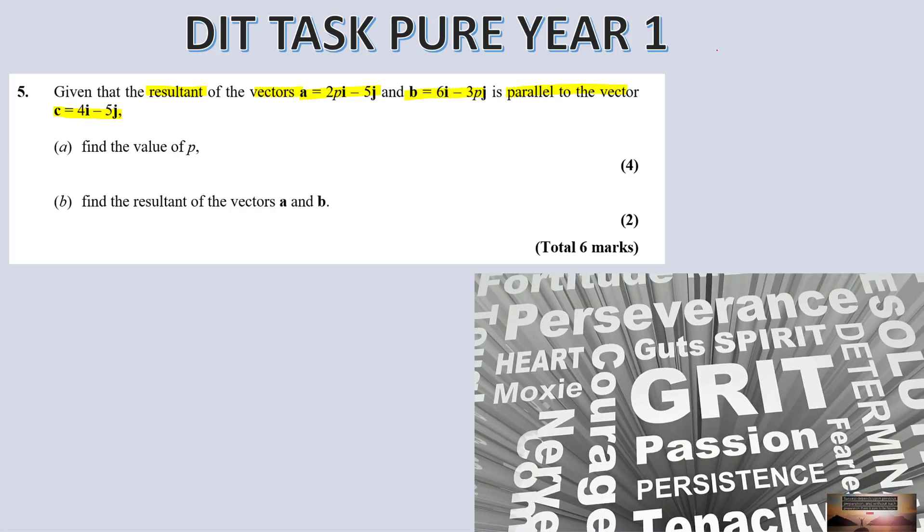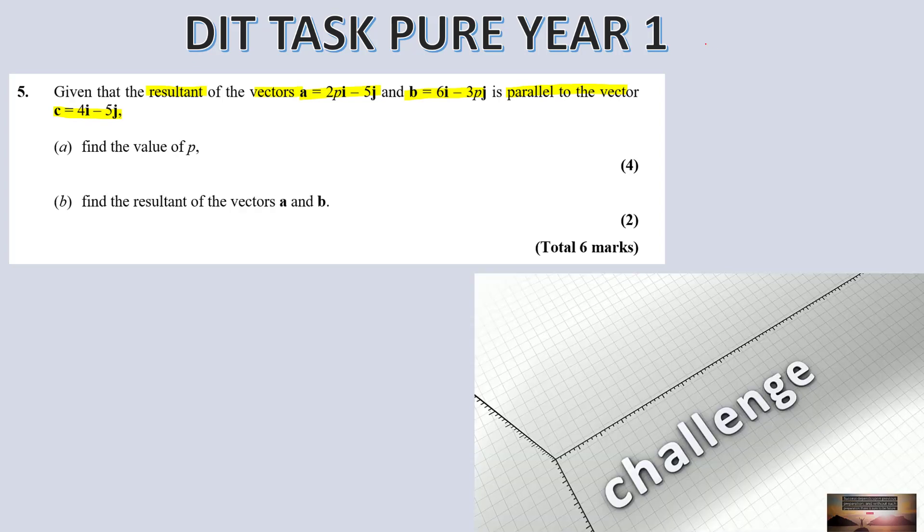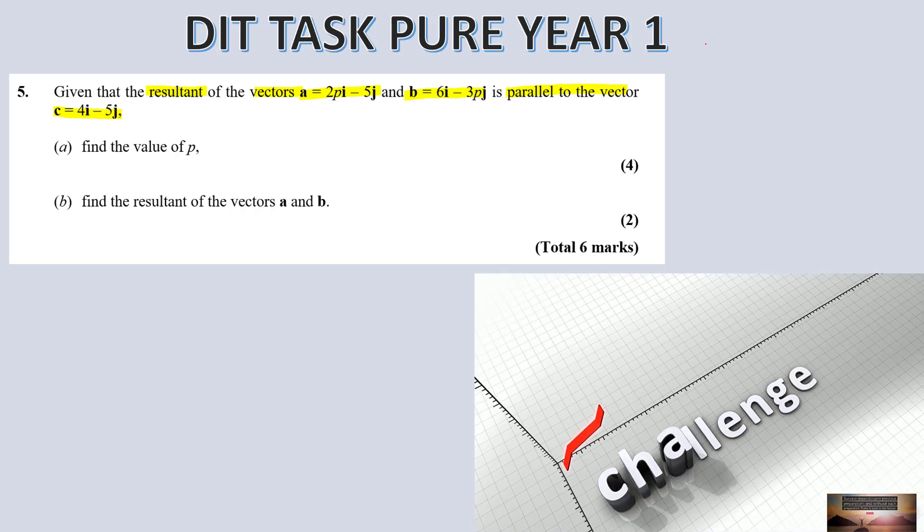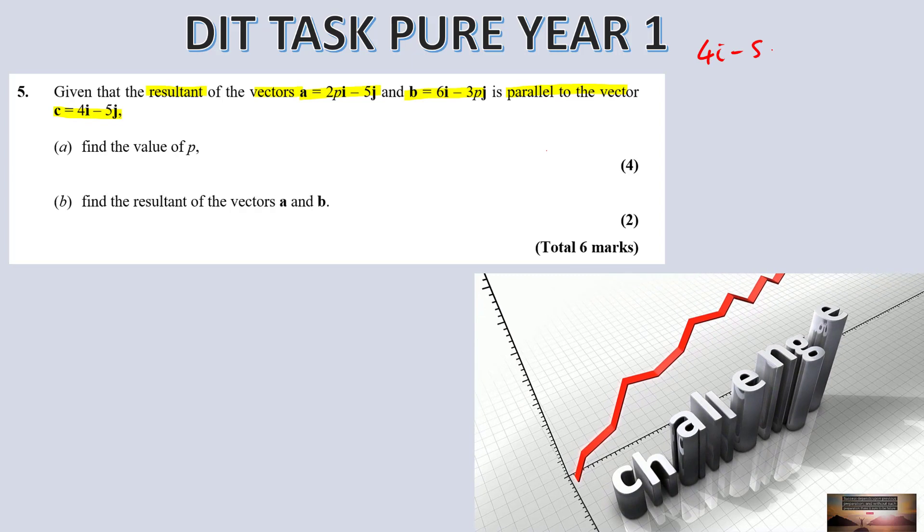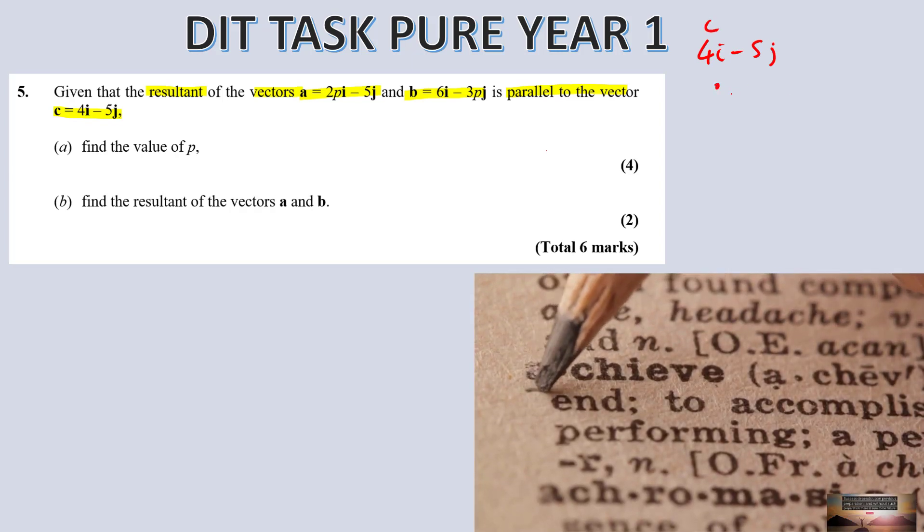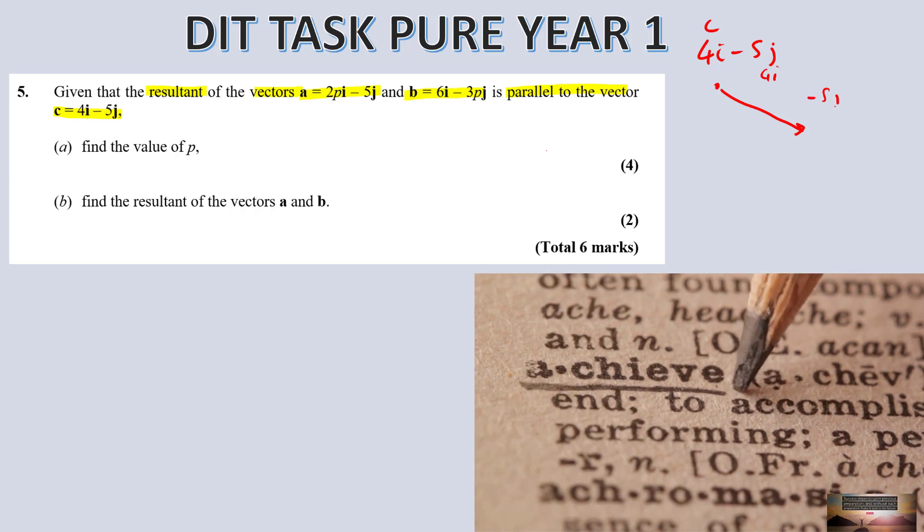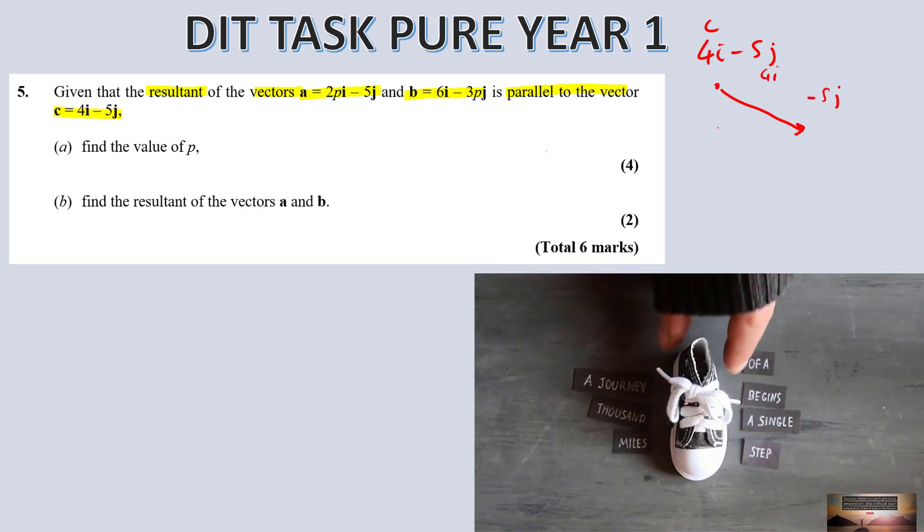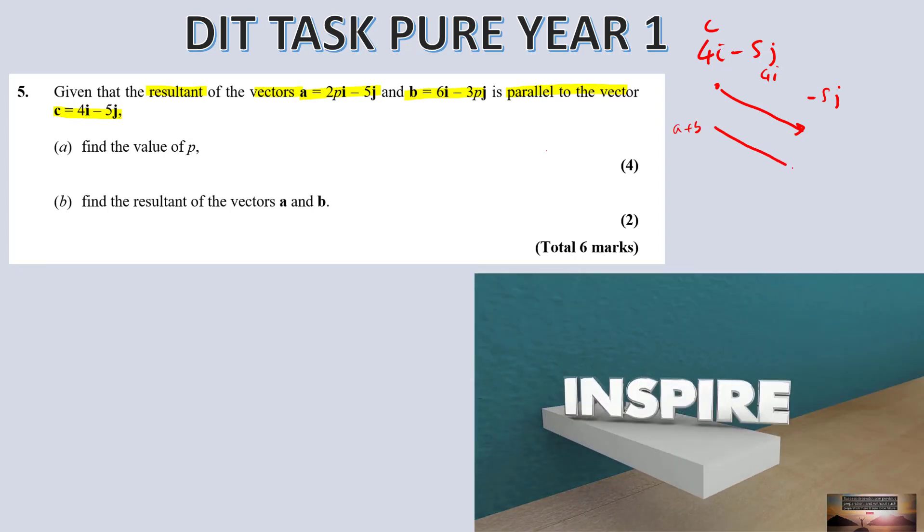4i minus 5j is going to be something like this. So 4i minus 5j, that's c, it's going to look something like 4i across 5 down, so that's like traveling like this, where it's got 4i this way and minus 5j. So what they're saying is, vector a and b combined, so a plus b, is actually going to be parallel and going this way as well.